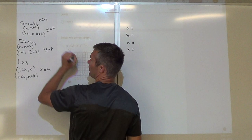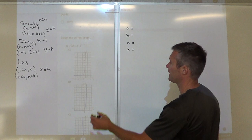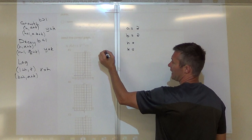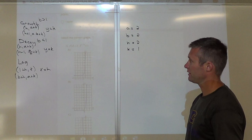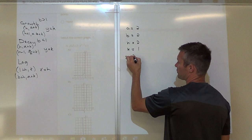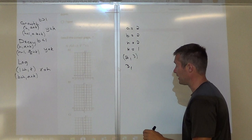On this first one, identify A, B, H, and K. So A is 2, B is 2, H is 2 (H is opposite the sign), and K is 1. The first reference point is my H value, so 2, and then A plus K, so that's 2 and 3. My second reference point is H plus 1, so that's 3, and then A times B is 2 times 2 equals 4, plus K, which is 5.